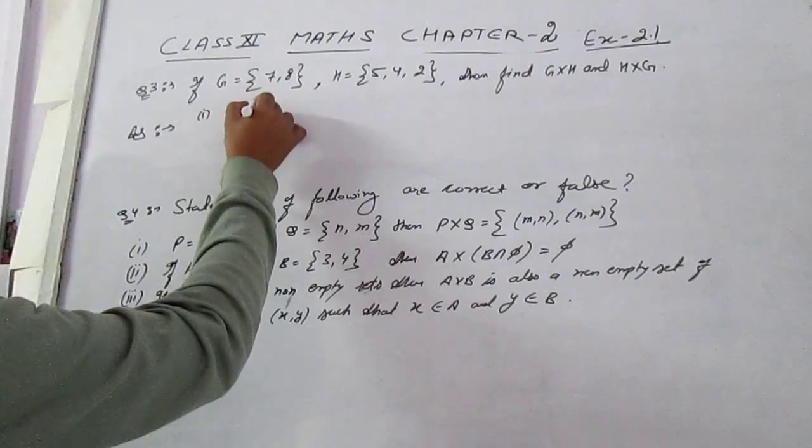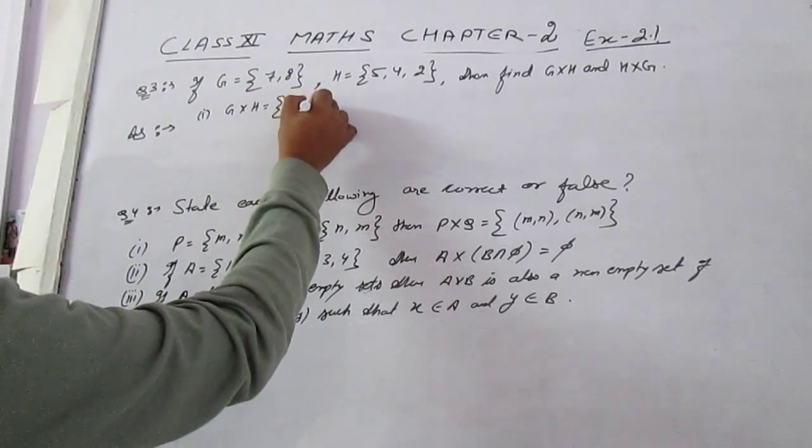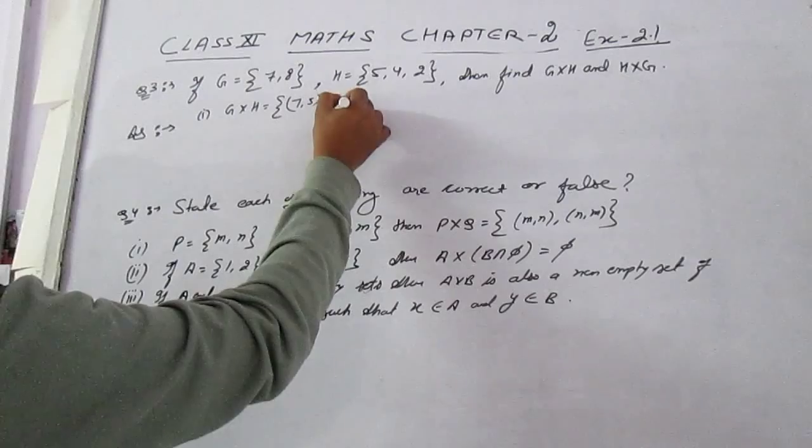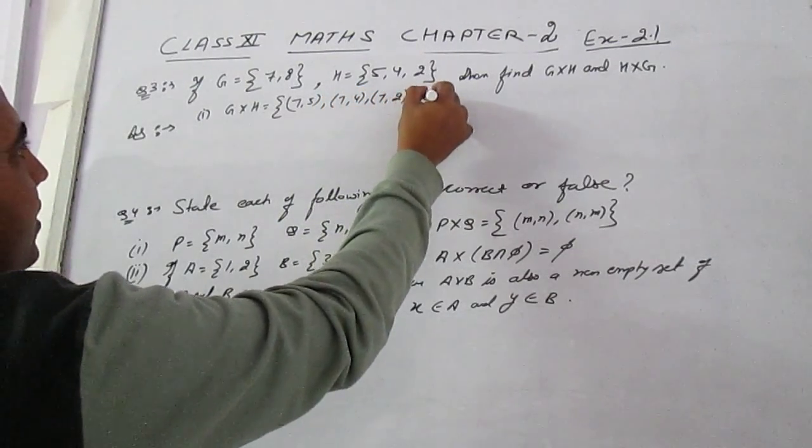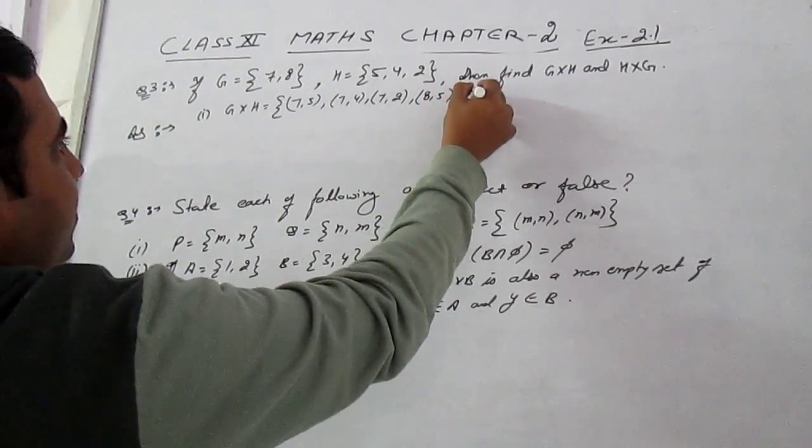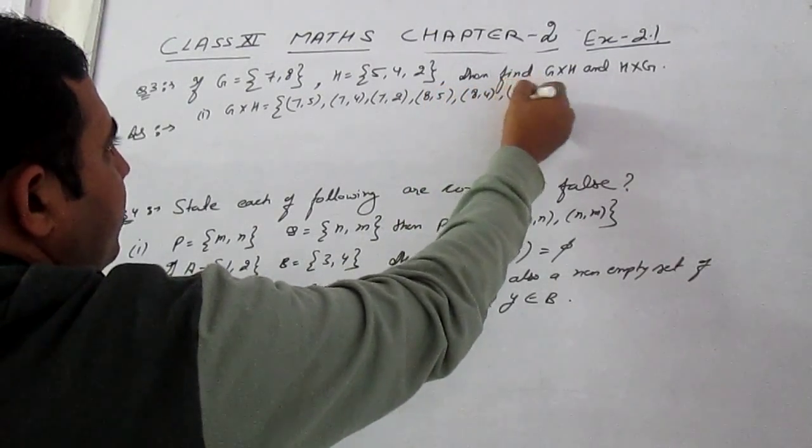First, we will find out G cross H. It is (7,5), (7,4), (7,2), (8,5), (8,4), (8,2).